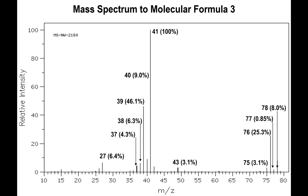Let's do another example where we determine the molecular formula of a compound based on the mass spectrum, then come up with a few isomers. Looking at the mass spectrum, we go to the farthest right — the highest masses. There are about four different peaks. We want to pick the M+ peak corresponding to the signal that is at least, if not equal in height to another peak. The peak at m/z 76 is the M+ peak, as it is the highest among those four.